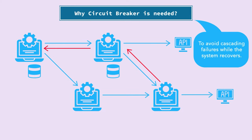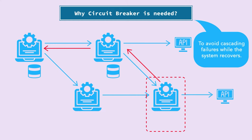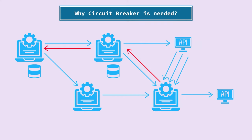Circuit breaker helps us avoid these cascading failures where a system might be down because of a database, CPU or memory issues, or because the application is bombarded with too many requests. In such cases, we try to stop the calls to the failing service by applying the circuit breaker pattern.